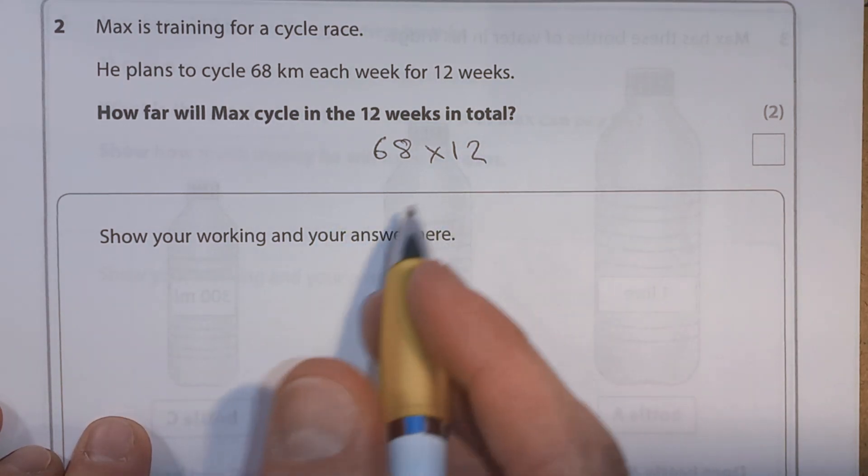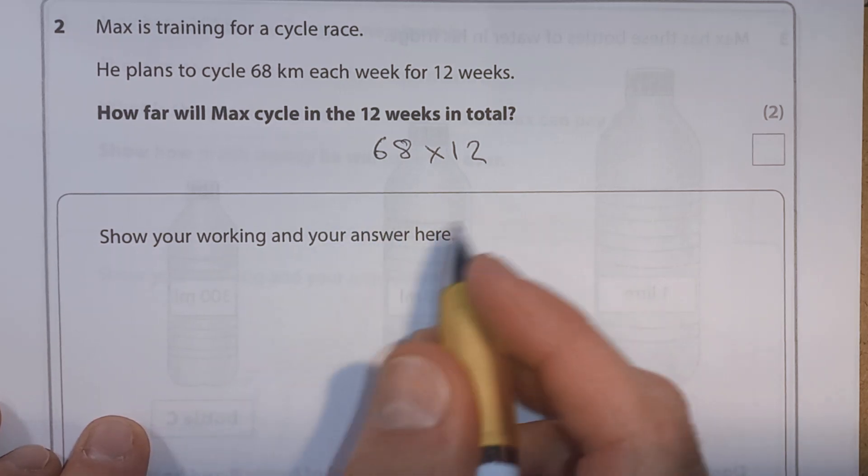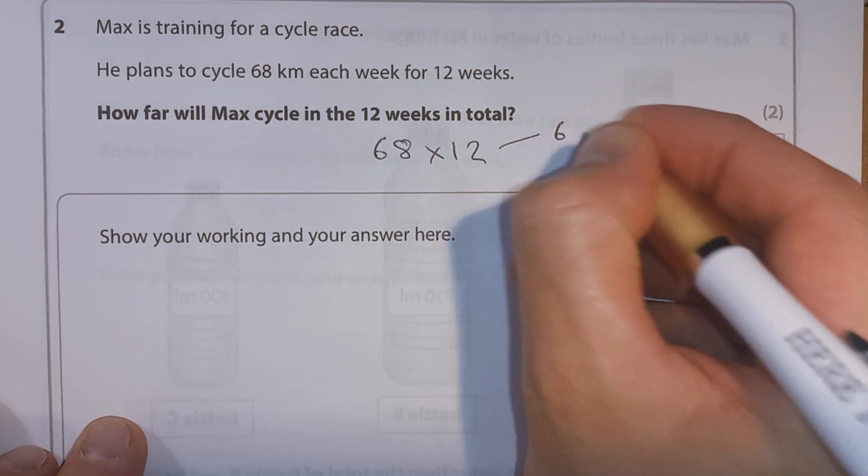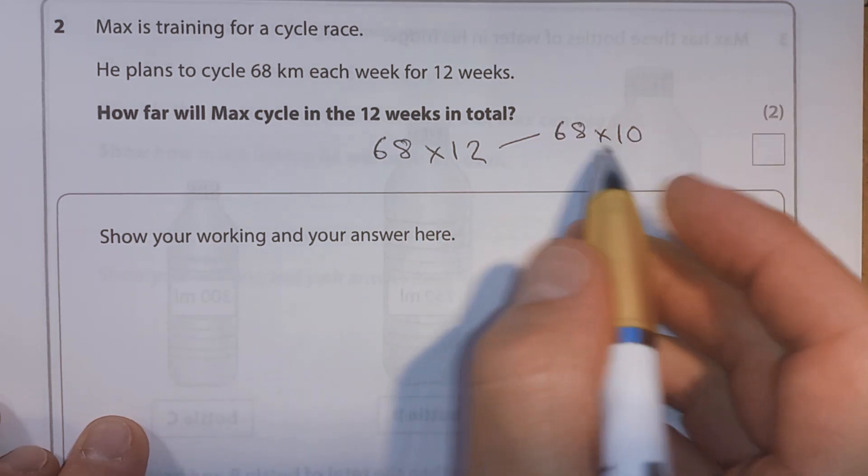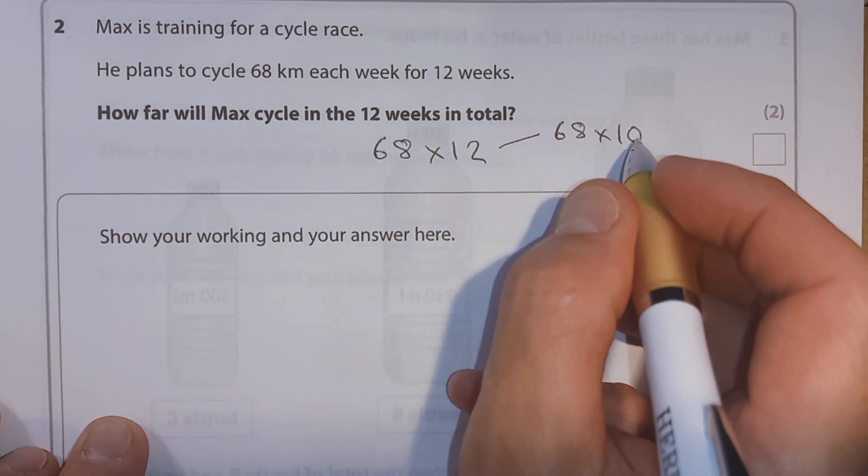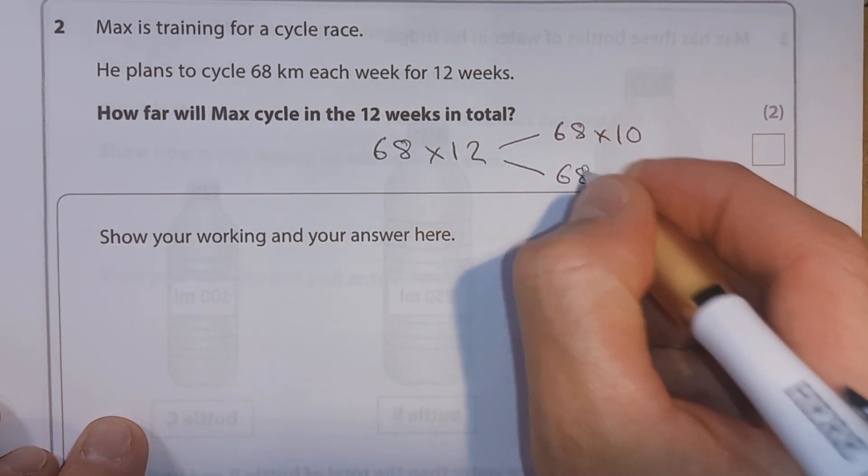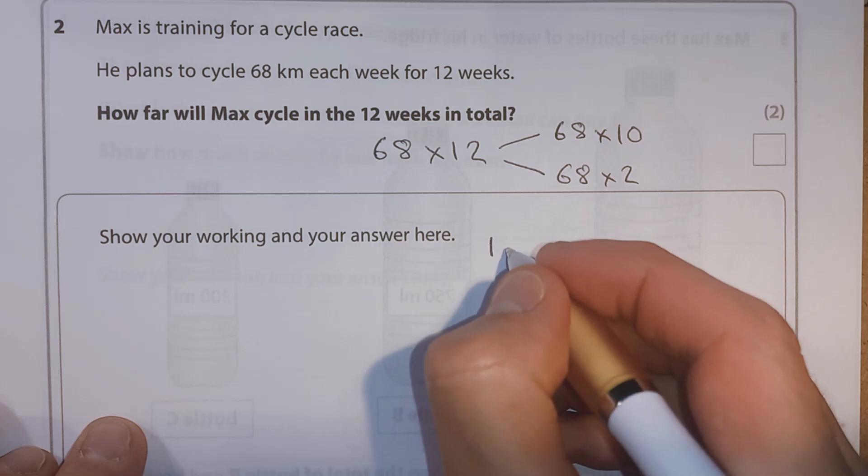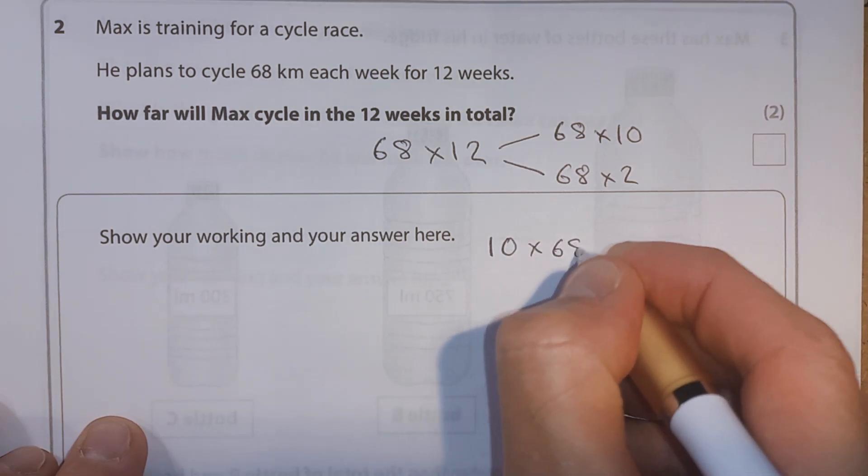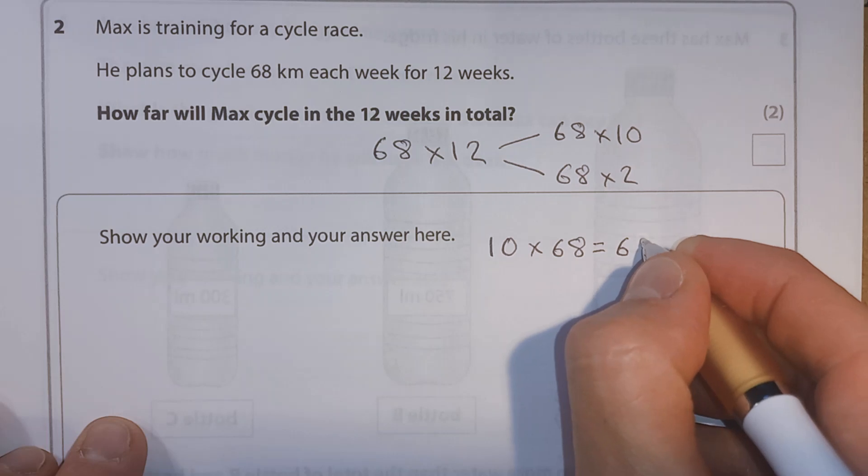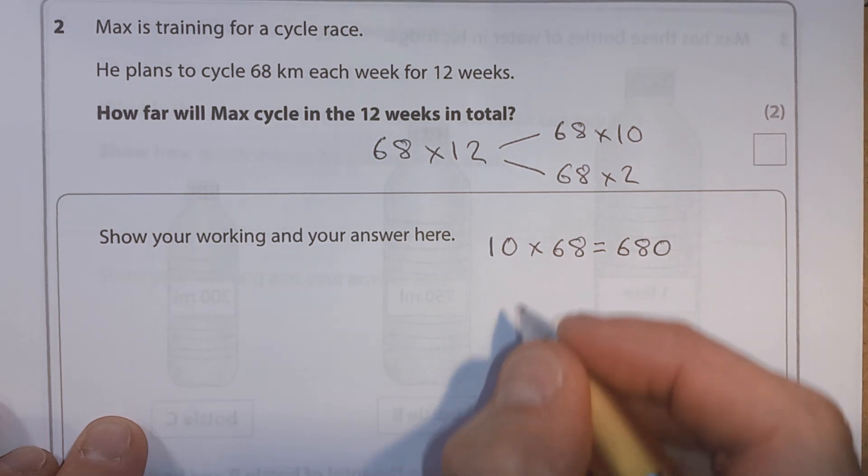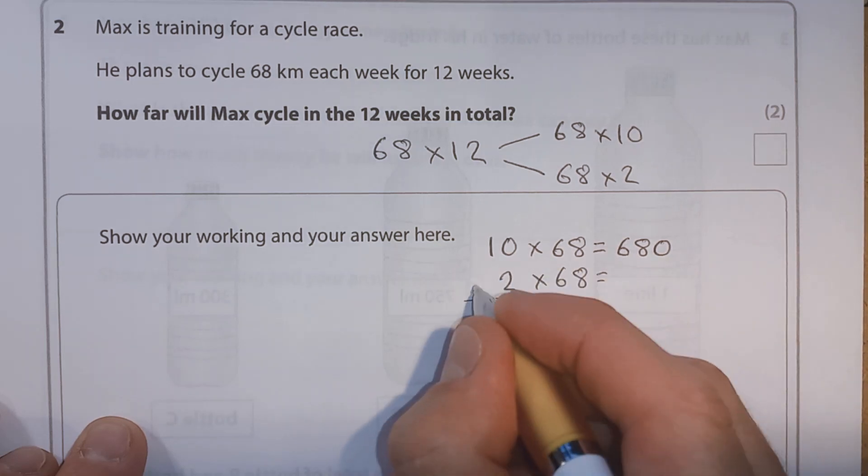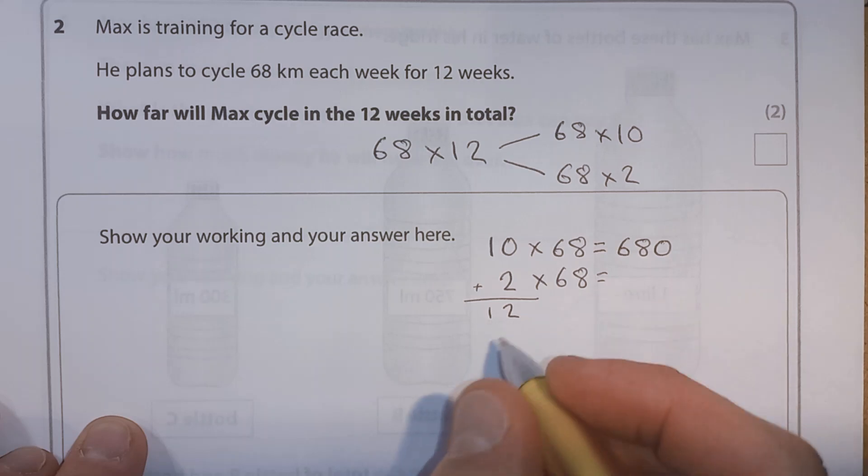But what we're going to do, we could do it as a column, but a two digit times a two digit can get a little bit messy. So we're going to split this up. We're going to think of it as 68 times 10, so we're going to have 10 lots of 68. And if we've only got 10 lots of 68, we need another two 68. So 68 times 2. Let's start off and I'm going to reverse the order. So I'm going to say 10 times 68. When we're multiplying by 10, we just put a zero on the end.